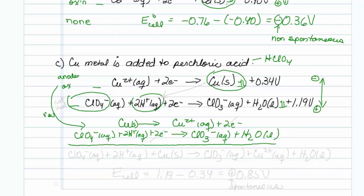And when I add them, my electrons conveniently cancel out again. So I'm left with ClO4- aqueous, plus 2 H+ aqueous, plus a copper solid, going to ClO3- aqueous, plus a copper 2+ aqueous, plus H2O liquid.